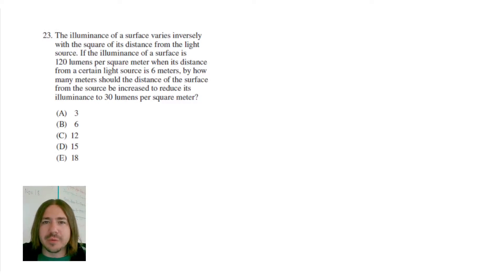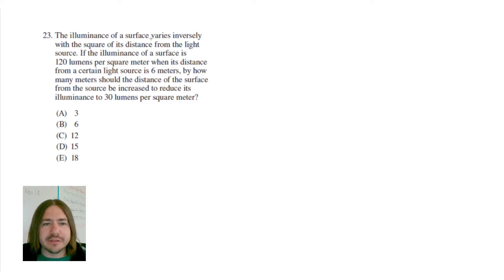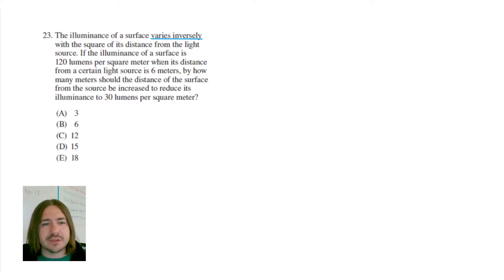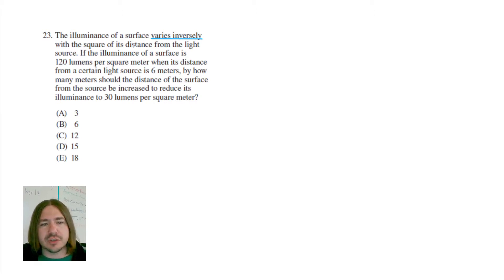Hey y'all, welcome back. On number 23 we've got a word problem that says the illuminance of a surface varies inversely — there's a key phrase there — with the square of its distance from the light source. If the illuminance of a surface is 120 lumens per square meter when its distance from a certain light source is 6 meters, by how many meters should the distance of the surface from the source be increased to reduce its illuminance to 30 lumens per square meter?